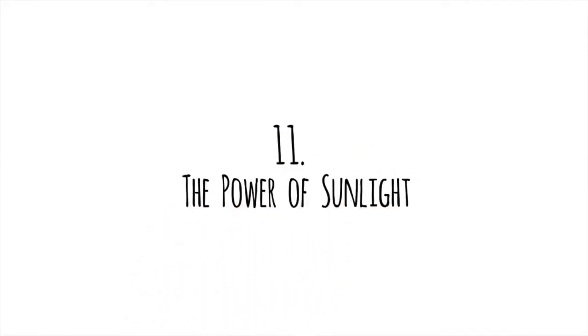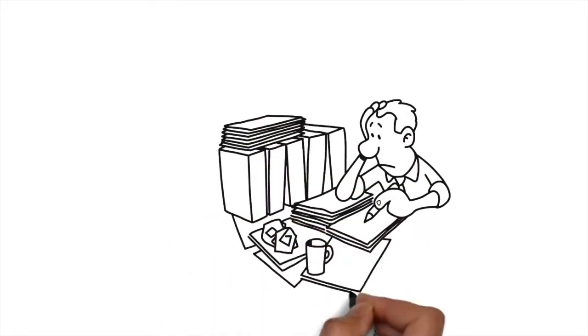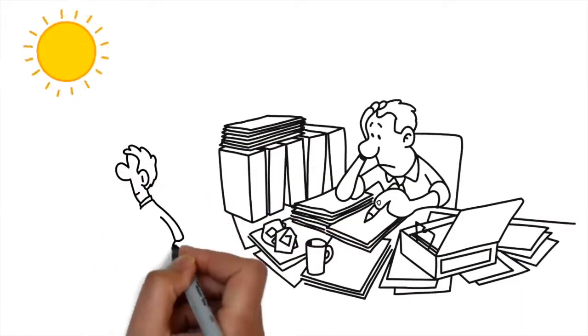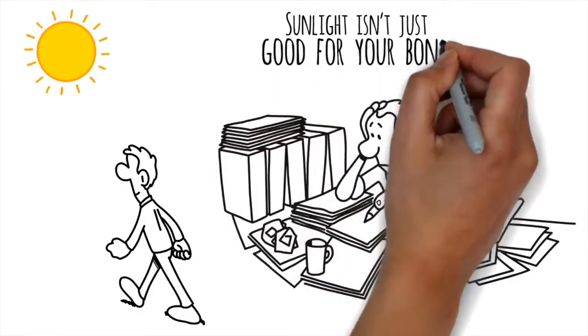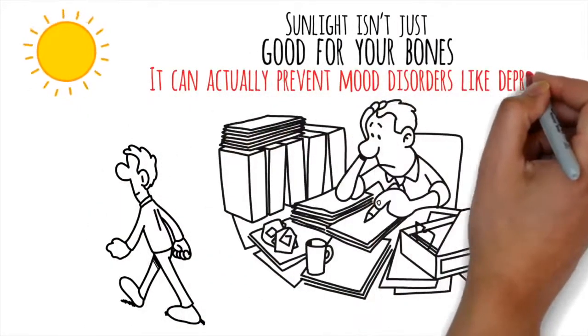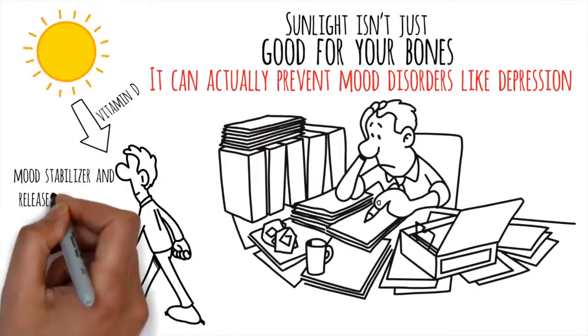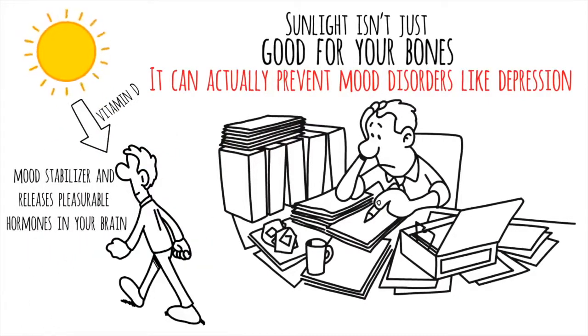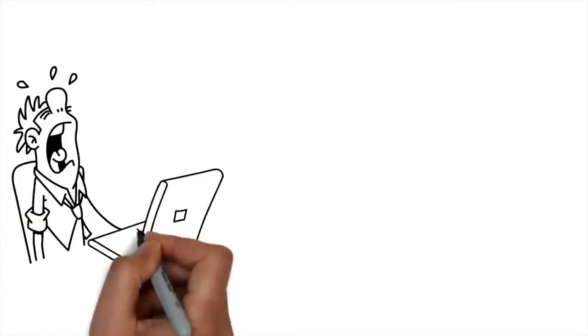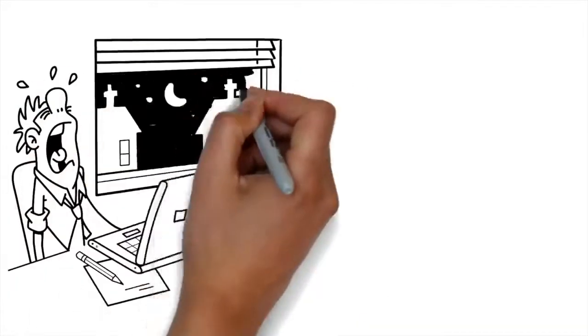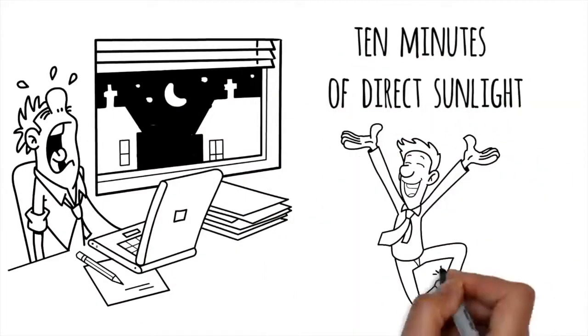The Power of Sunlight. Have you ever noticed you feel down when you've been inside all day, but when you walk outside, your mood instantly changes? Sunlight isn't just good for your bones, it can actually prevent mood disorders like depression. The vitamin D you get from the sun acts as a mood stabilizer and releases pleasurable hormones in your brain. This is why people in countries with less sunlight are more likely to be depressed. All you need is 10 minutes of direct sunlight to literally and figuratively brighten up your world.